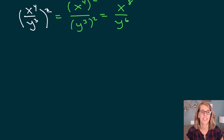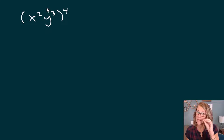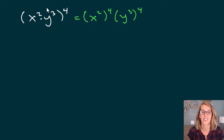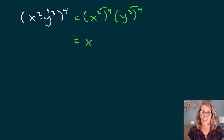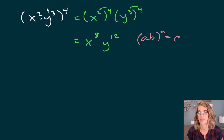The next property is really similar. If I've got x squared y cubed all to the fourth power, in a multiplication I can also bring this power through as long as everything is multiplied on the inside. So this becomes x squared to the fourth times y cubed to the fourth. I multiply those powers together — two times four and three times four — and I end up with x to the eighth, y to the twelfth. So a times b to the nth power, as long as they're multiplied together, is a to the n times b to the n.